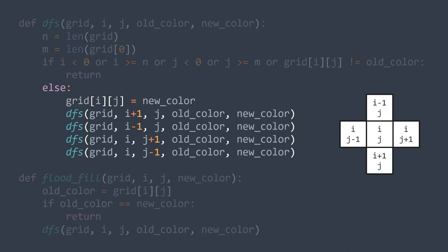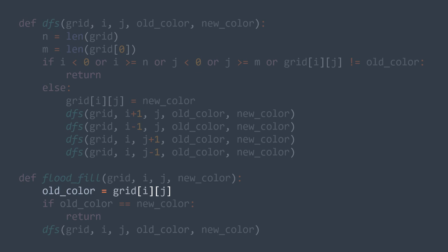In the non-recursive function, we first detect the color of the cell from where we start. If it's equal to the new color, we don't even call the recursive function, because we'd just be coloring the area with the same color so nothing will change. Else, we call the recursive function to fill the area with the new color starting from cell (i, g).